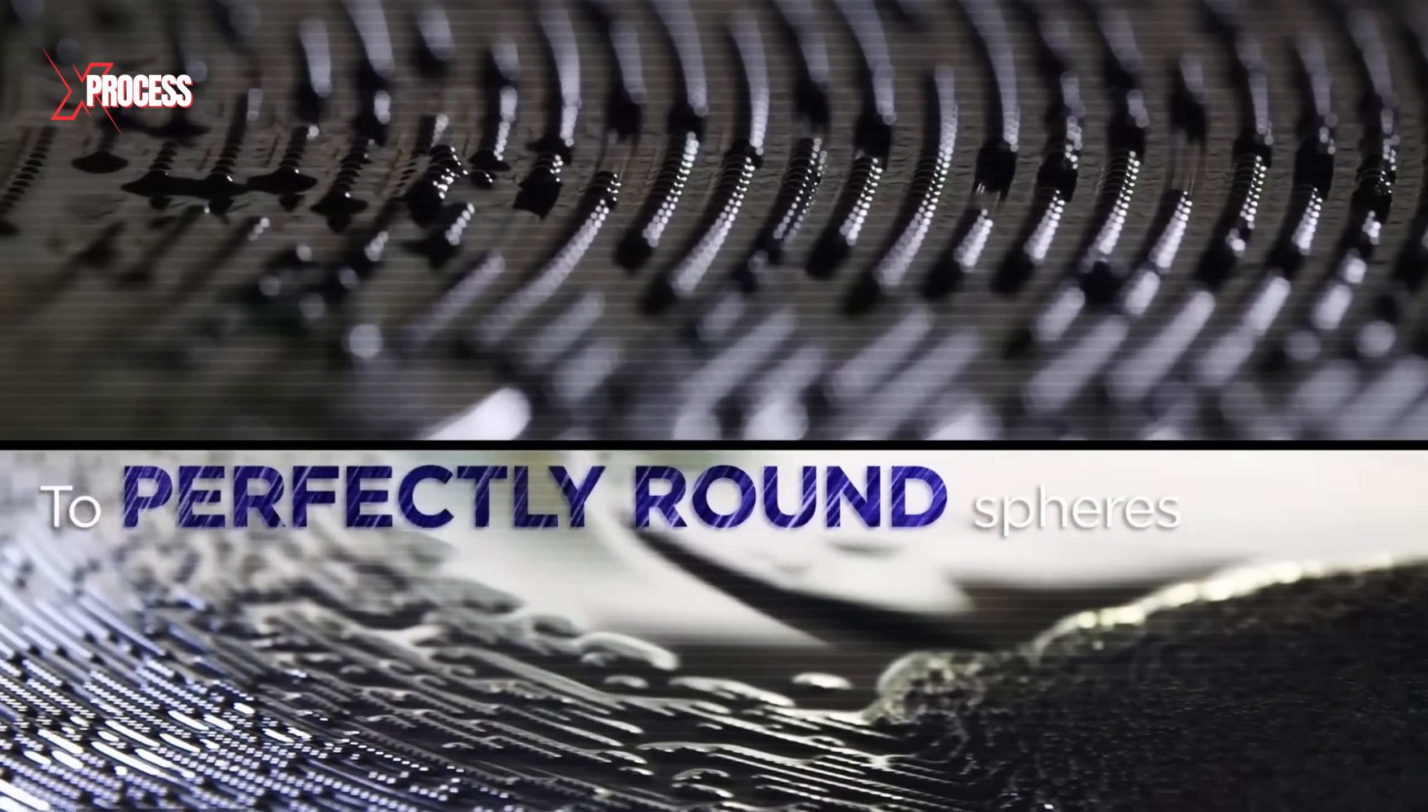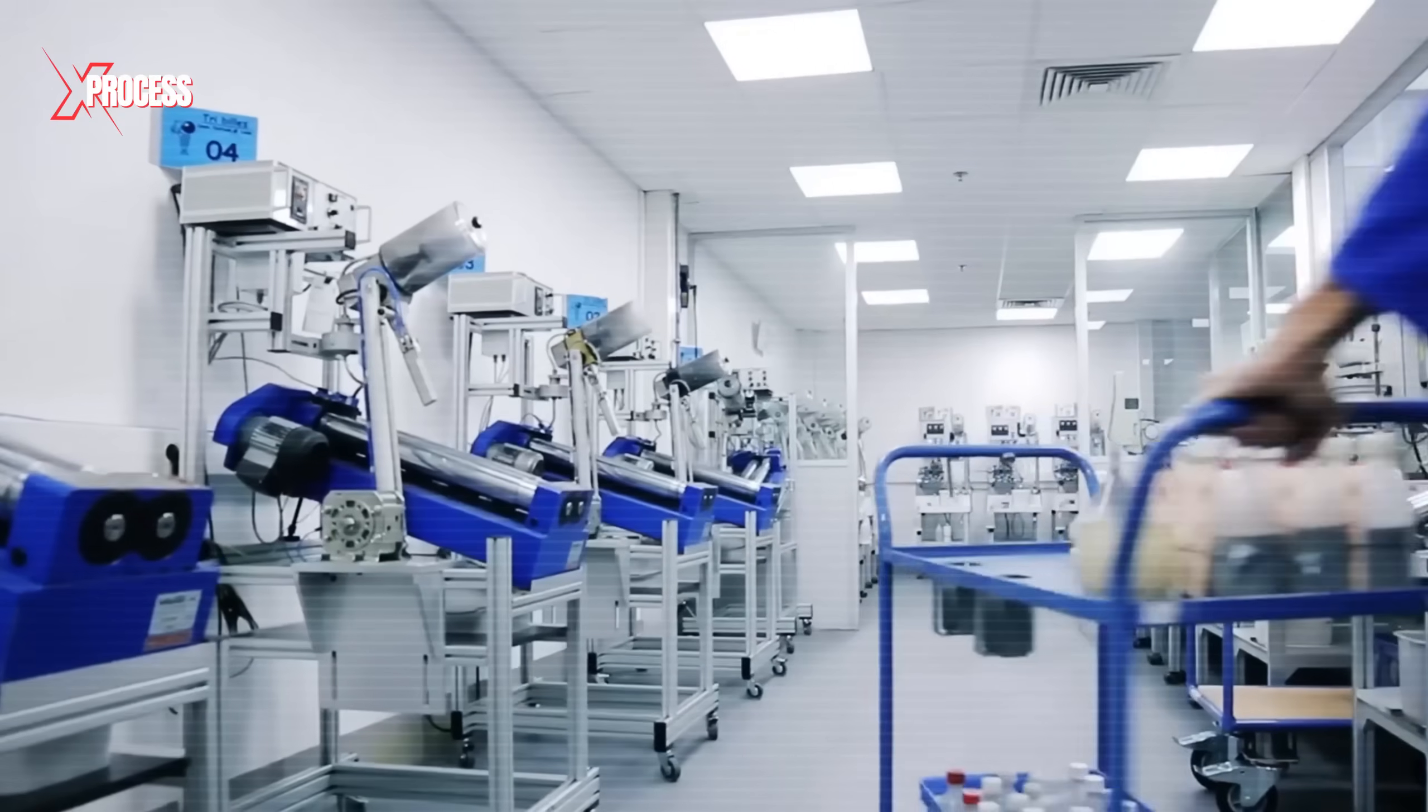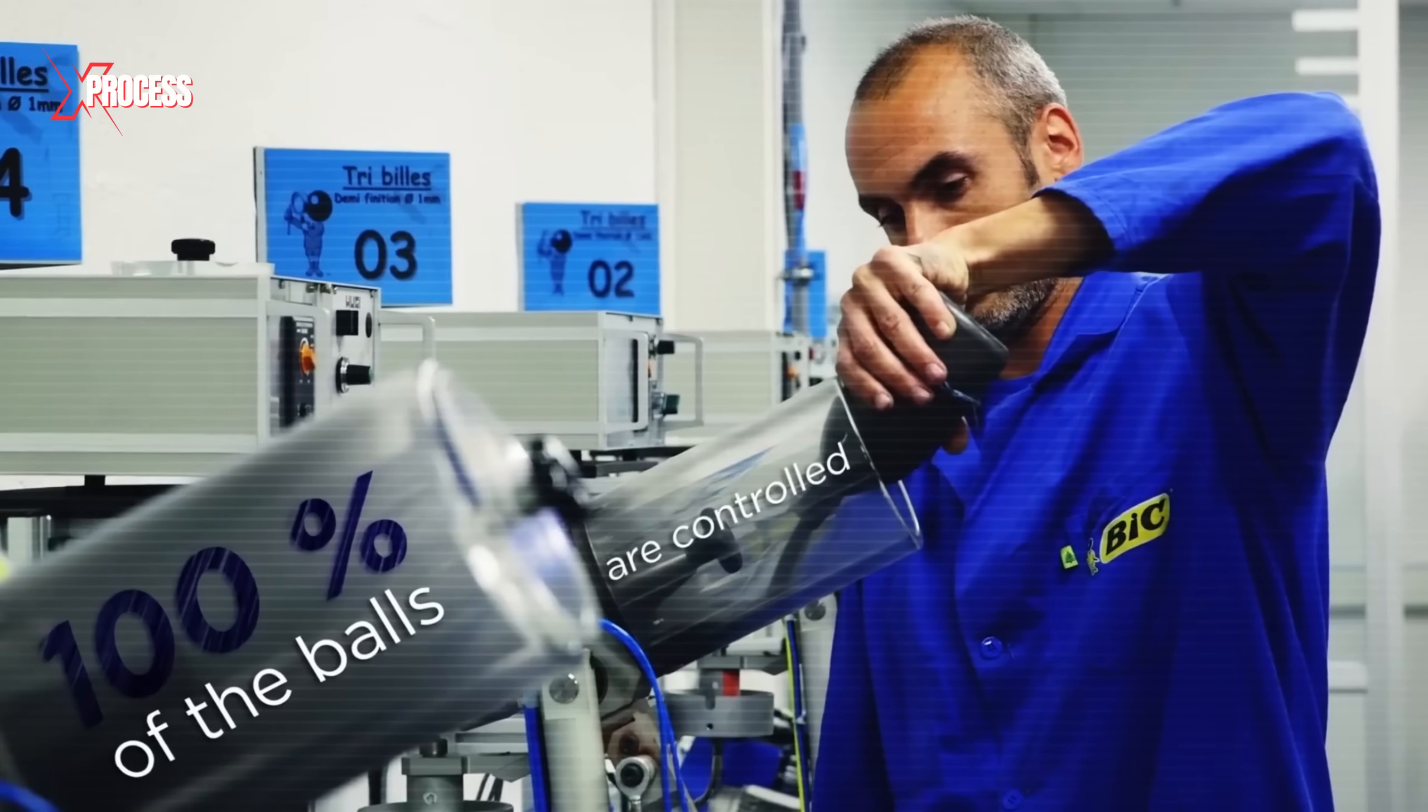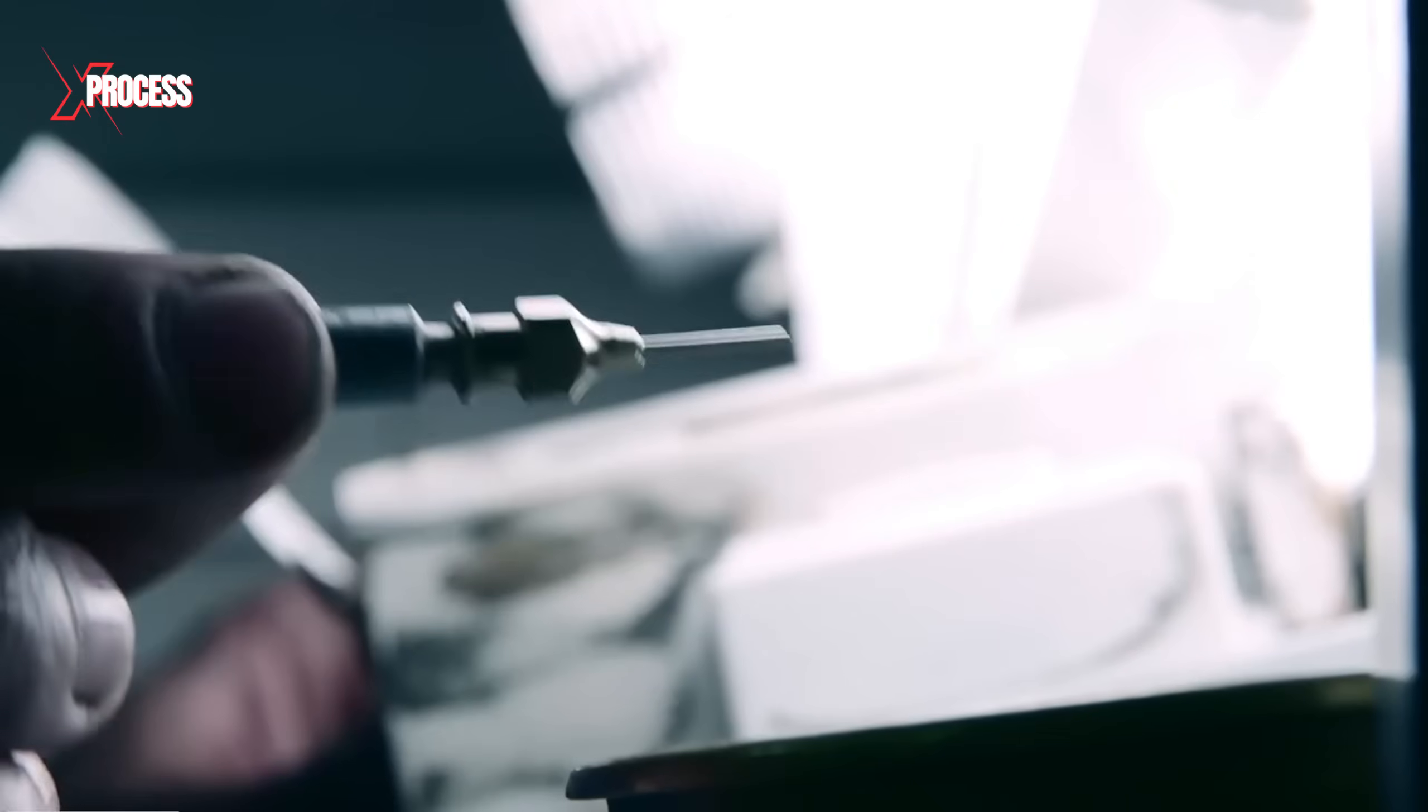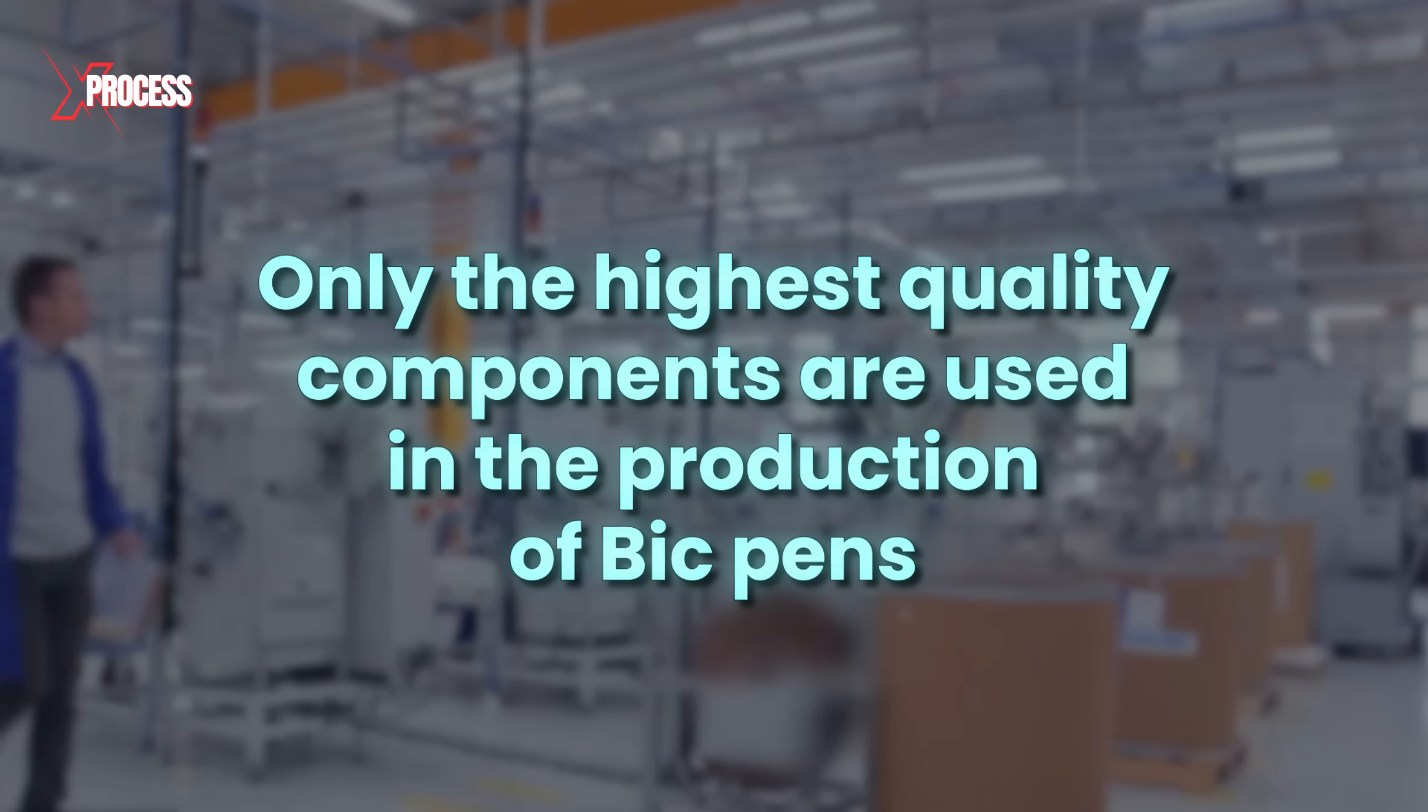Pen manufacturers must ensure that all balls meet stringent quality standards. Samples are taken from each batch to inspect and identify any potential defects. If more than one ball out of every 5,000 is found to be flawed, the entire batch is promptly withdrawn and discarded. This rigorous quality control process ensures that only the highest quality components are used in the production of BIC pens.